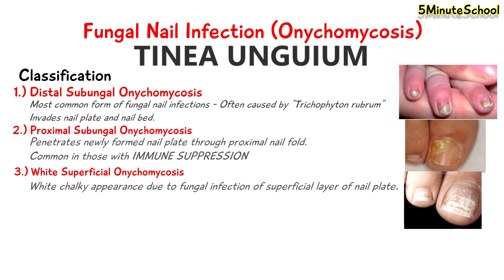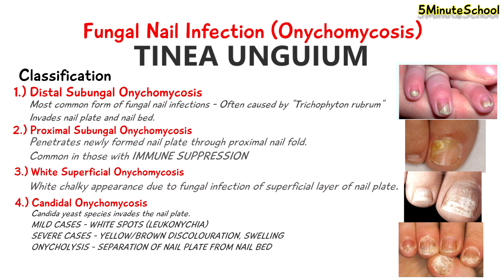The fourth type is called candidal onychomycosis, where the candida yeast species invades the nails. In mild cases there may just be the appearance of white spots called leukonychia; however, in severe cases there may be yellow-brown discoloration and swelling around the nail fold. Onycholysis may also occur in such cases, where we have separation of the nail plate from the nail bed.